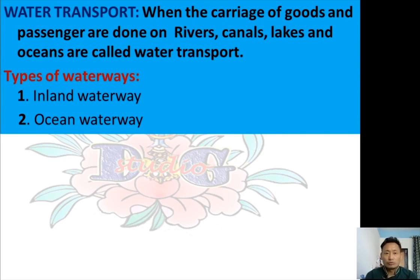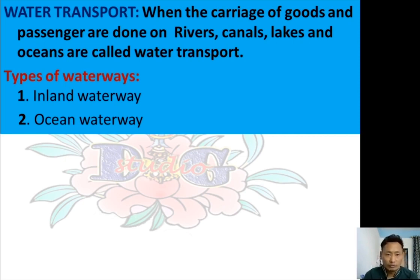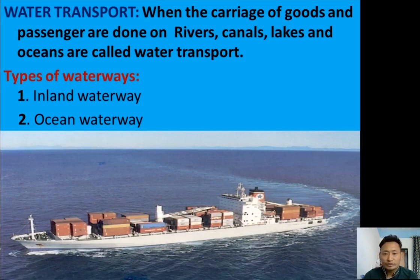Next we will learn about water transport. Water transport means the carriage of goods and passengers on water bodies such as rivers, lakes, canals, and oceans. Water transport is further divided into two types: inland waterways, which involve navigating on rivers and lakes inside the land, and ocean waterways, which involve navigating on the open sea via large vessels.